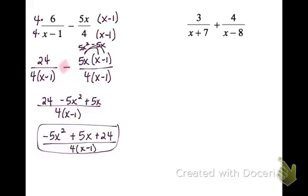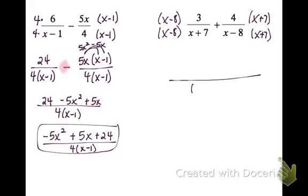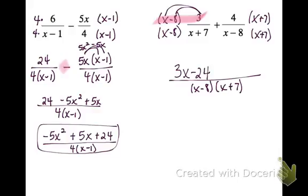Next problem. Same thing — we need like denominators. I'm going to multiply the left fraction, top and bottom, by x minus 8, and the right fraction, top and bottom, by x plus 7. My common denominator is x minus 8 times x plus 7 — no need to FOIL it out. Then I multiply 3 times x minus 8 to get 3x minus 24, plus 4 times x plus 7 to get 4x plus 28. Combining like terms gives 7x plus 4, all over x minus 8 times x plus 7.